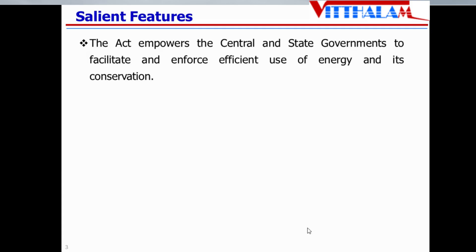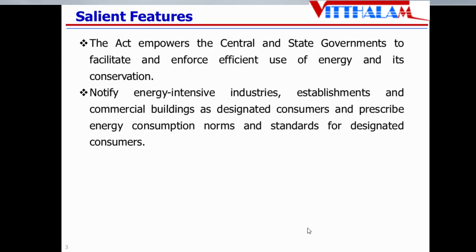Regarding salient features, this act empowers the state and central governments to facilitate and enforce efficient use of energy and its conservation. It notifies energy intensive industries — those which consume quite high energy, like cement, steel, metal industry like aluminum, fertilizer, textile, including railways and commercial buildings — which includes hotels and airports as designated consumers, and prescribes energy consumption norms and standards to those designated consumers. The act was amended in 2010.